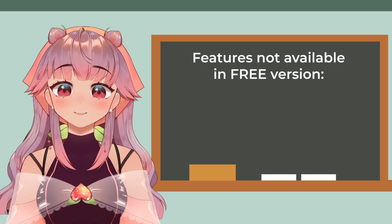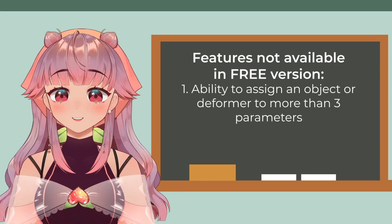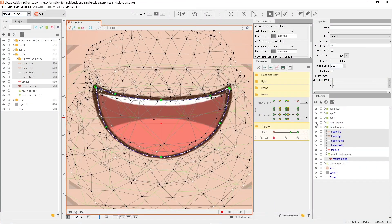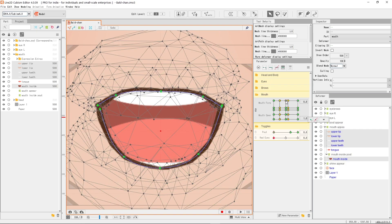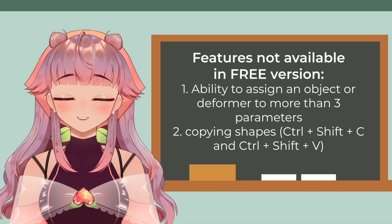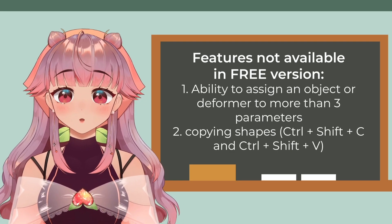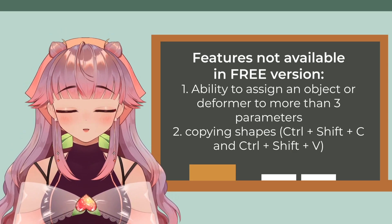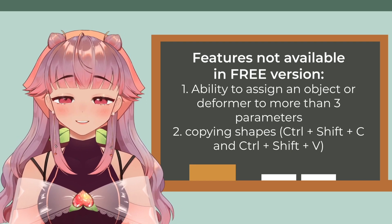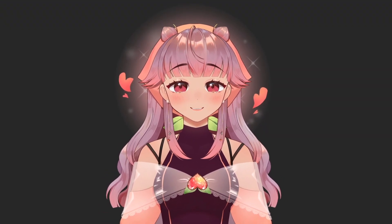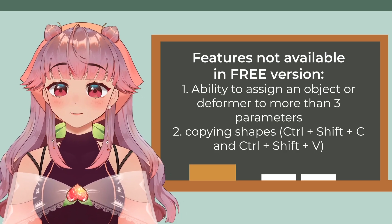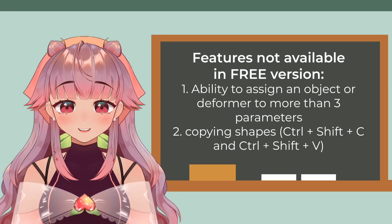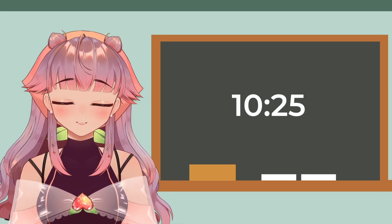I'd also like to note that there are some features not available in the free version that are important for efficiency in making expressions. These are the ability to assign things to more than three parameters, and copy and pasting shape using CTRL+SHIFT+C and CTRL+SHIFT+V shortcuts. The first limitation requires you to be very careful with the parameters you assign to art meshes and deformers, and means you'll need to make more expressions that are stickers. But if you'd like more toggle parameters, there is a workaround for the free version with some compromise — you can skip to that timestamp to learn more.